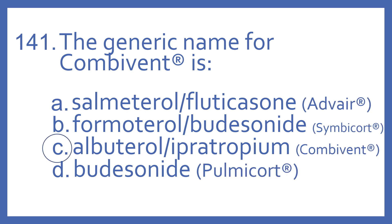And the answer is C. The generic name for Combivant is albuterol with ipratropium, and that is a beta-2 bronchodilator and anticholinergic bronchodilator combination. Salmeterol with fluticasone is the generic for Advair — that's a long-acting beta-2 bronchodilator and steroid combination. Formoterol with budesonide is the generic name for Symbicort, which is also a long-acting beta-2 bronchodilator with a steroid.